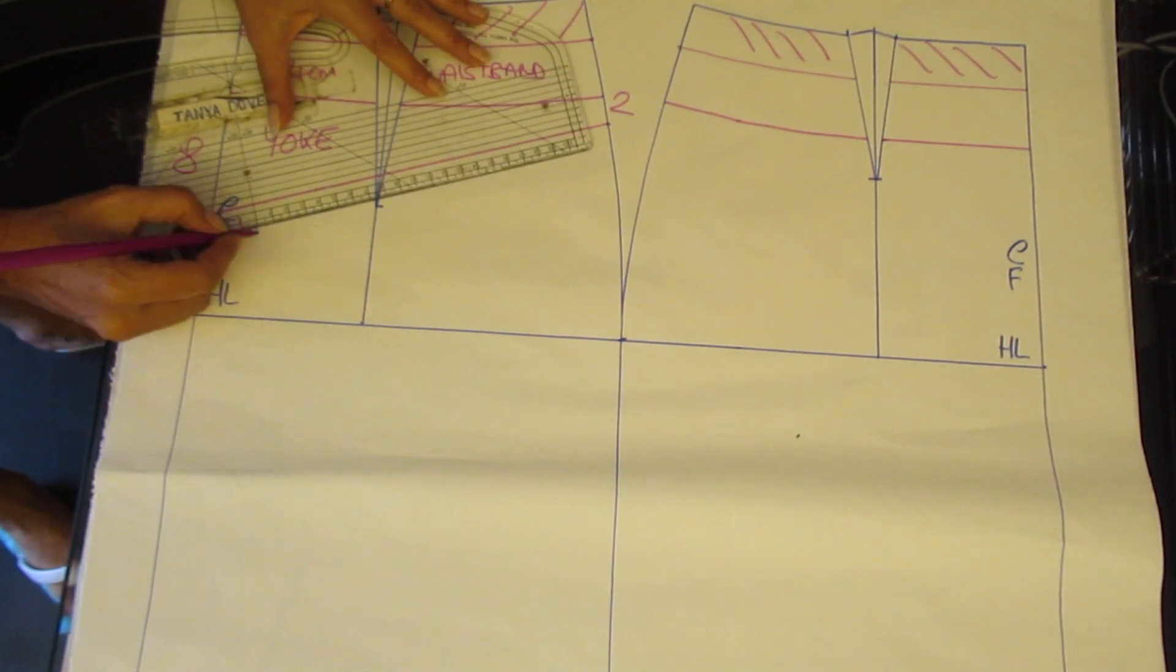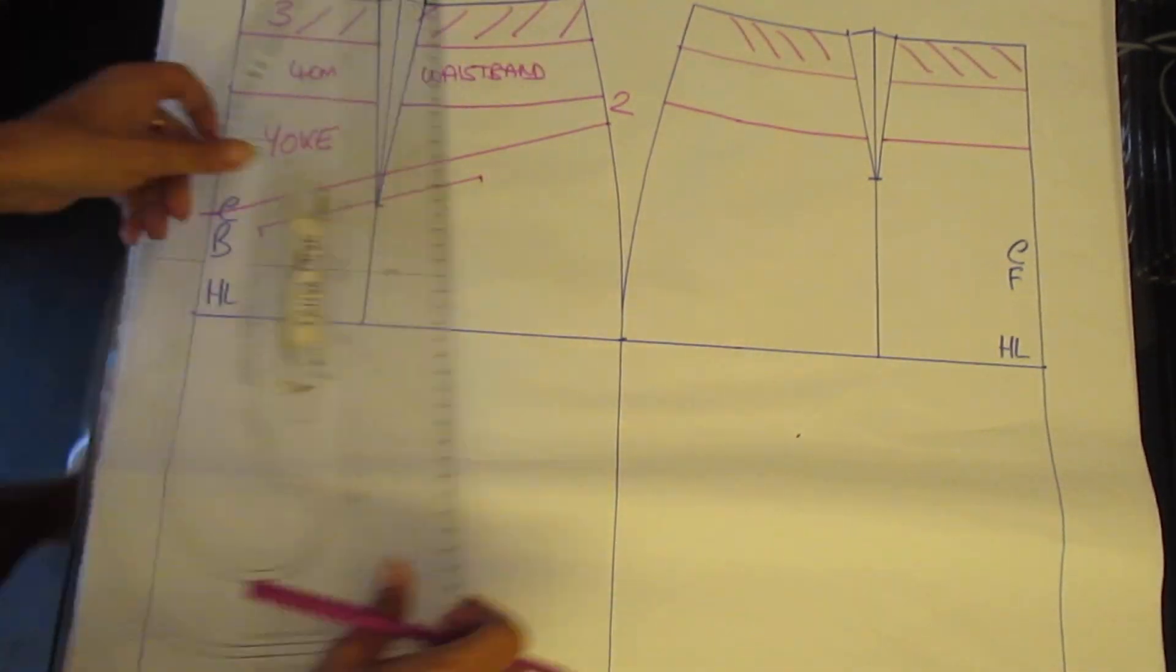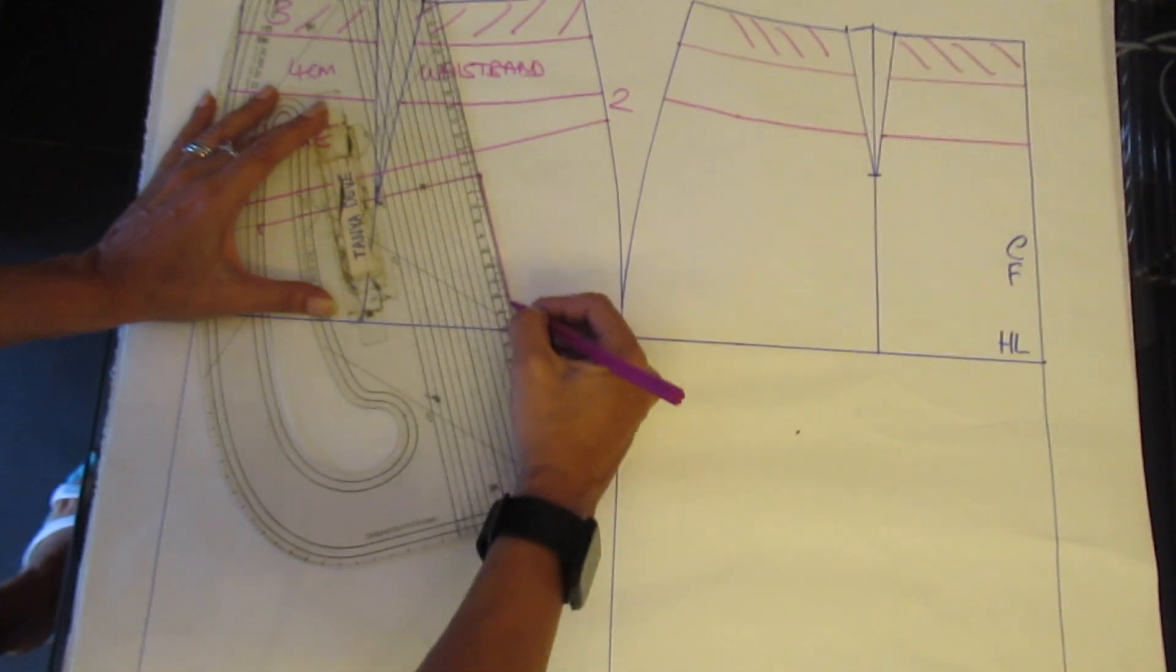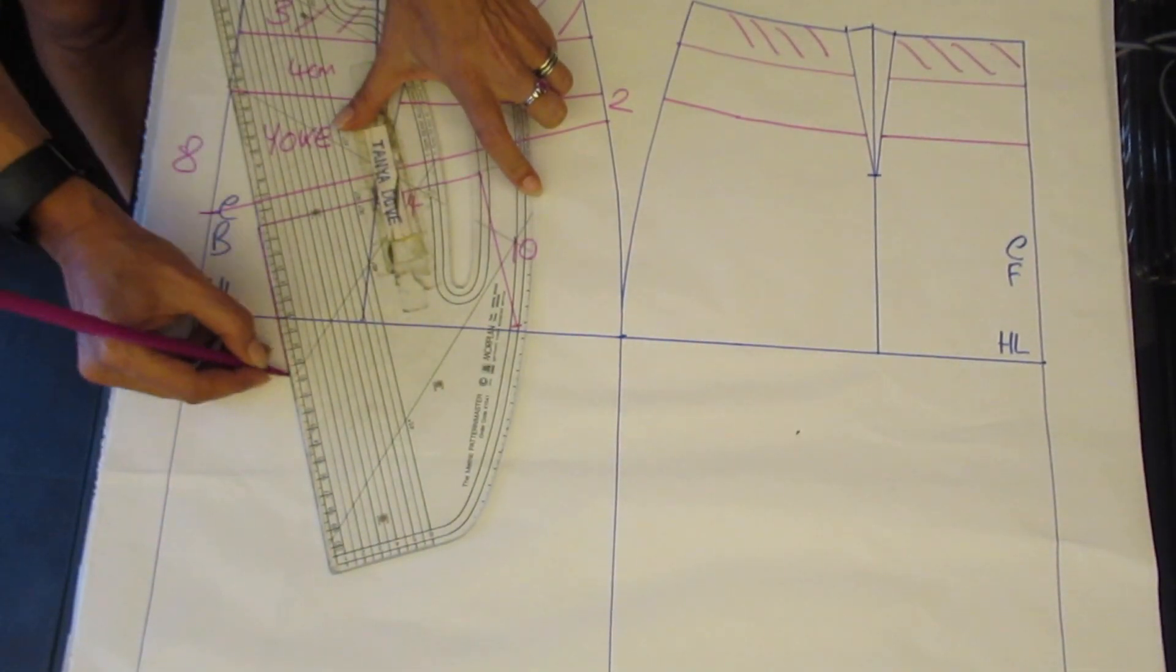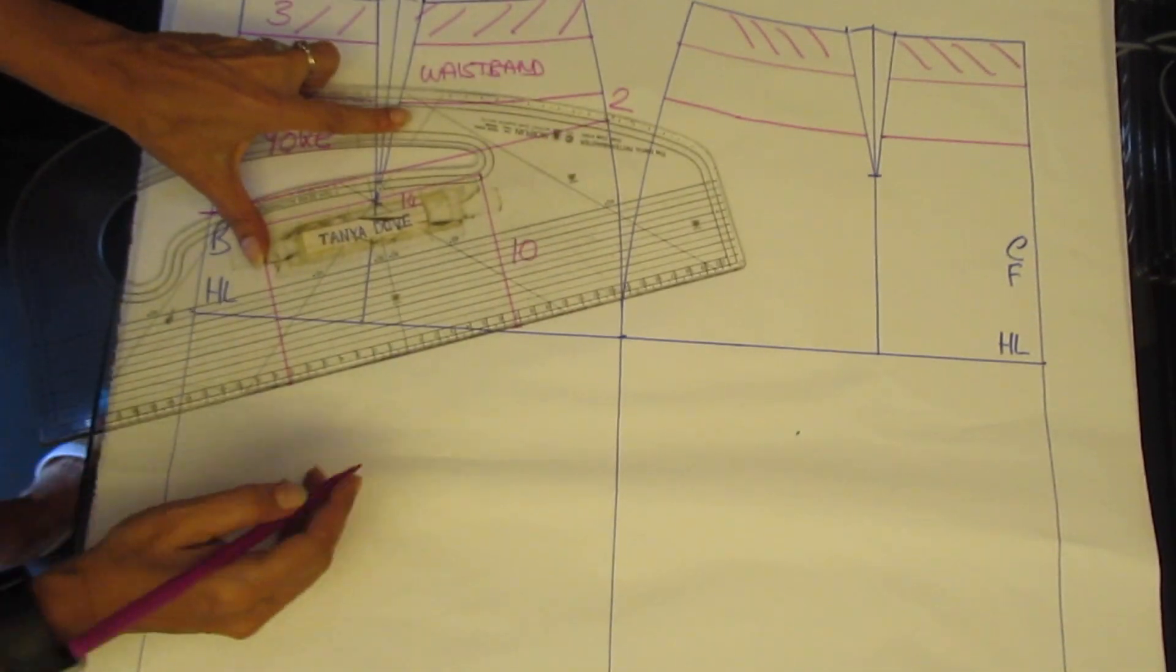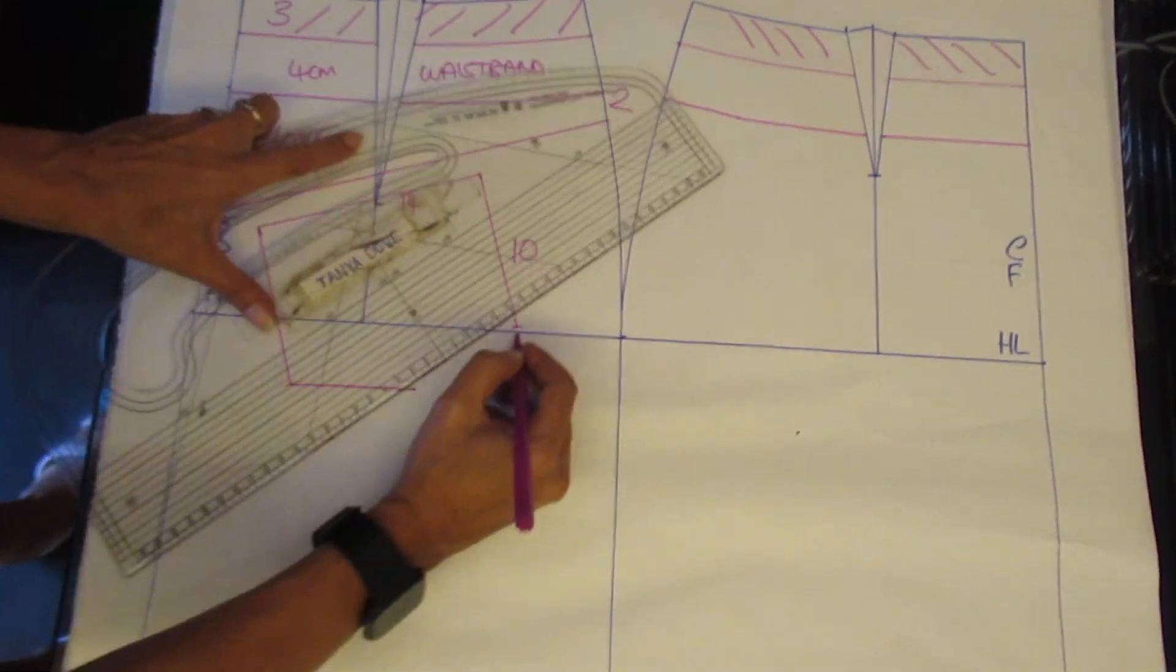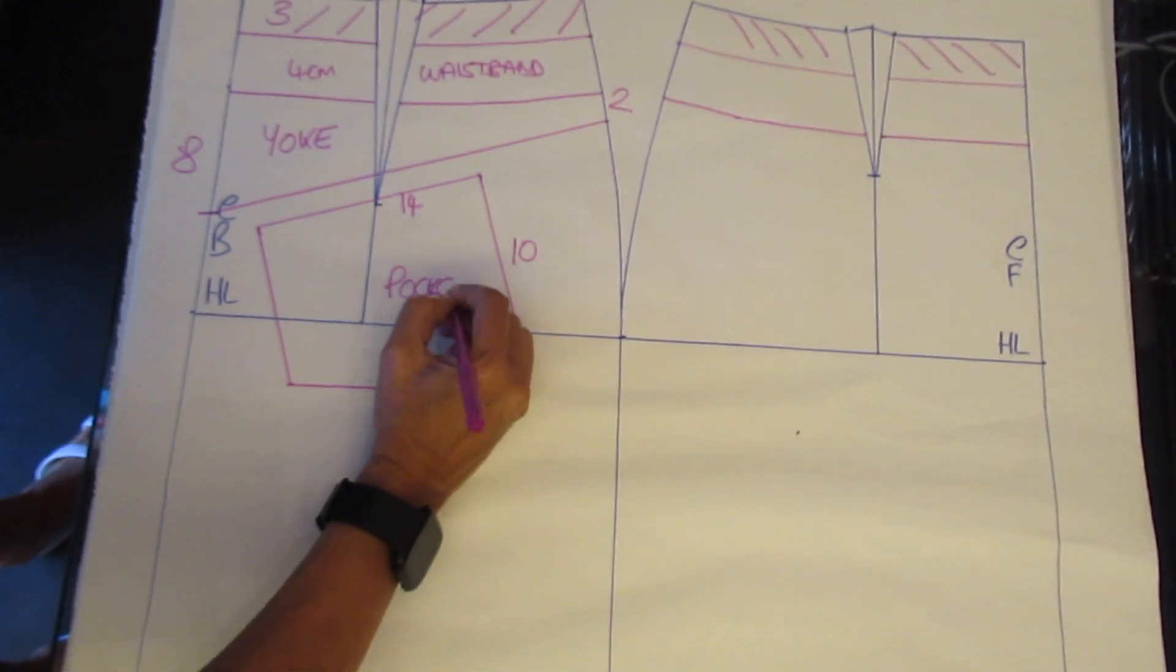Draw in your back patch pocket, this one is 3cm from the centre back line. The length of the pocket is 10cm and the width is 14cm. The bottom peak is 2cm lower giving a soft triangle.